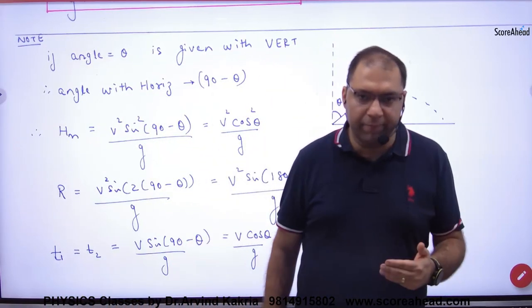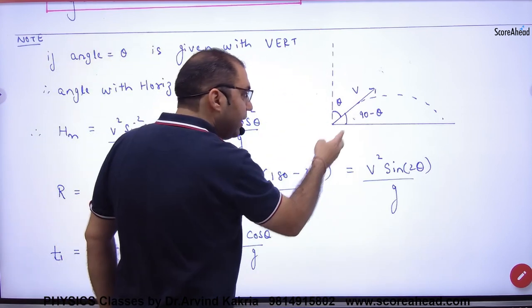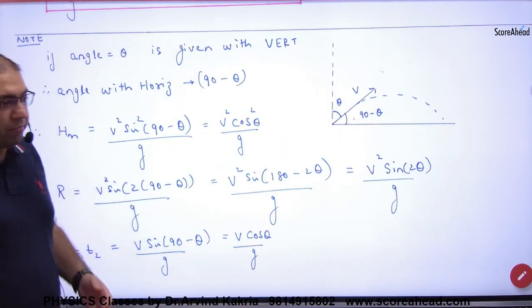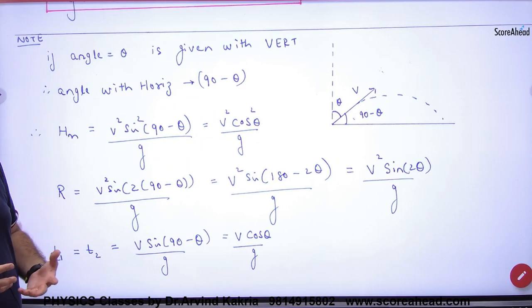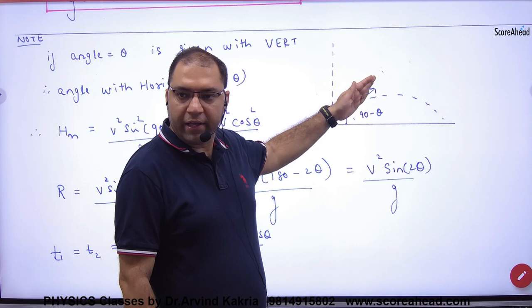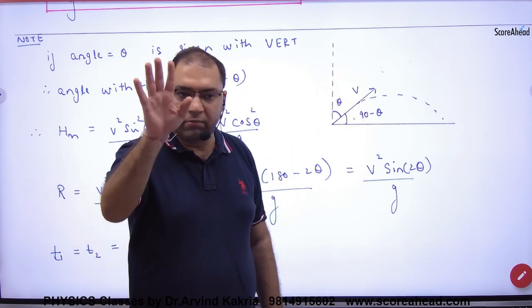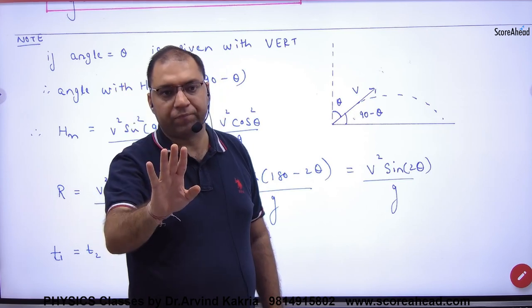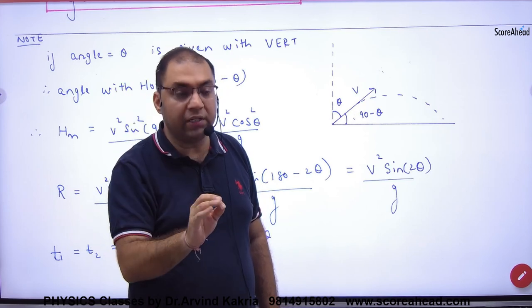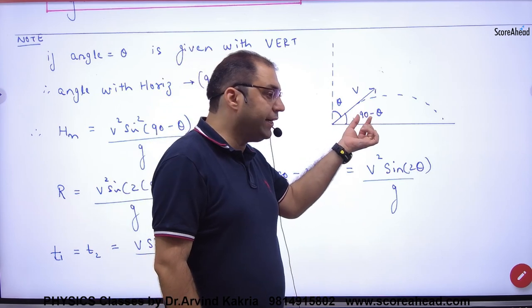If you have a projectile, how do you make an angle with a vertical? Make an angle theta with a vertical. We have done so many topics where a projectile with velocity V is making an angle of theta with a horizontal. We have derived maximum height, range, time of descent.